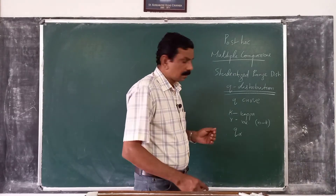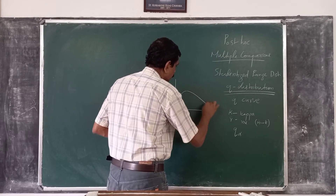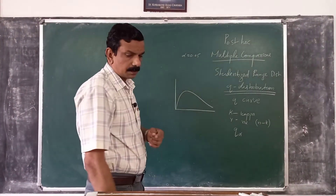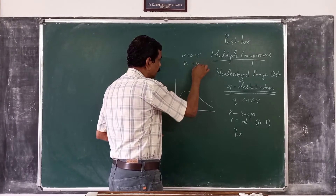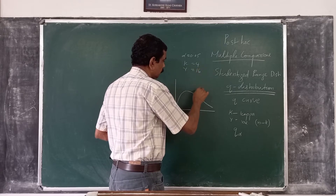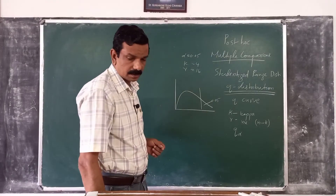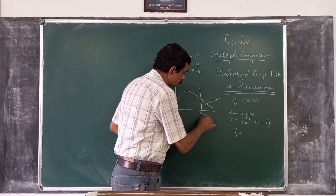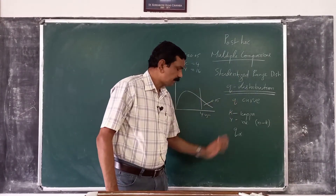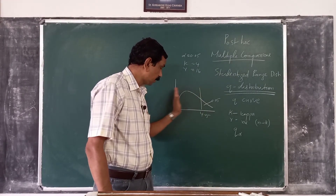For example, as given in the textbook, suppose that alpha is 0.05, kappa is 4, and nu is 60. Then the value of q is 4.05. This means only 5 percent of the q distribution lies to the right of 4.05, or 95 percent of the q distribution lies to the left.